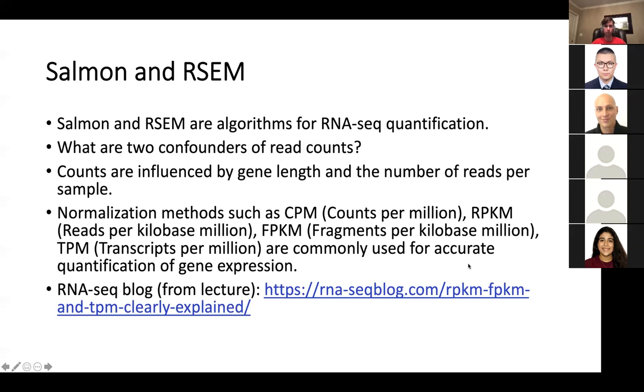To get around this, we introduced these four measurements today: counts per million, RPKM, FPKM, and TPM. Counts per million is the simplest, which is just for a given gene you're looking at the number of reads per million fragments sequenced. For example, if you have a thousand reads that map to the gene CD8 but you sequenced a billion fragments, then the counts per million for that gene would only be one.